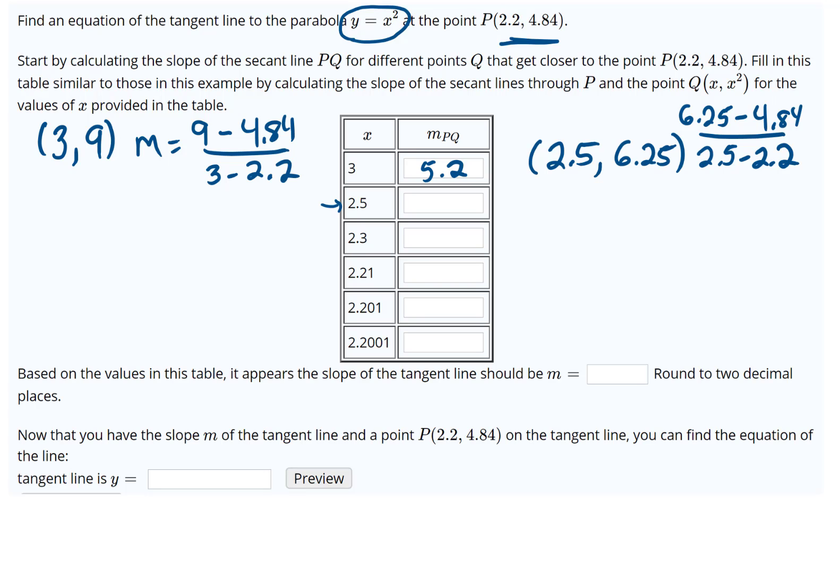Go ahead and compute that slope and it looks like we get 4.7. We're going to continue, so now we're on 2.3. We take 2.3 and square it to get 5.29. We're going to compute the slope the same way: 5.29 minus 4.84, divided by 2.3 minus 2.2. When we compute that, we get 4.5.